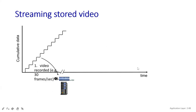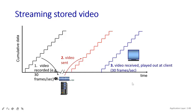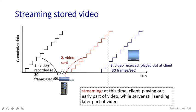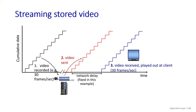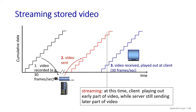Now you can see here — this is my streaming stored video. The stored video is there, these are my cumulative data values, and my 30 frames per second it is receiving. This diagram shows you how network delay happens. It has been sent first here, but after some time it is going to be received — that is your network delay. At this time the client is playing out the early part of the video while the server is still sending. The video has been sent from the server but on the user side they have not seen it yet — all due to your congestions.